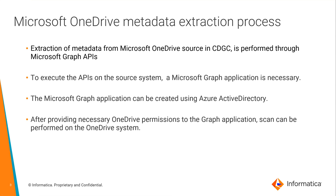Extraction of metadata from Microsoft OneDrive source in CDGC is performed through Microsoft Graph APIs. To execute the APIs of the OneDrive source system and extract the metadata, a Microsoft Graph application is necessary. This Microsoft Graph application can be created using Azure Active Directory. Once this app is created, registered, and provided the necessary permissions for OneDrive metadata extraction, a scan can be triggered from Metadata Command Center and the extracted metadata can be viewed in CDGC.